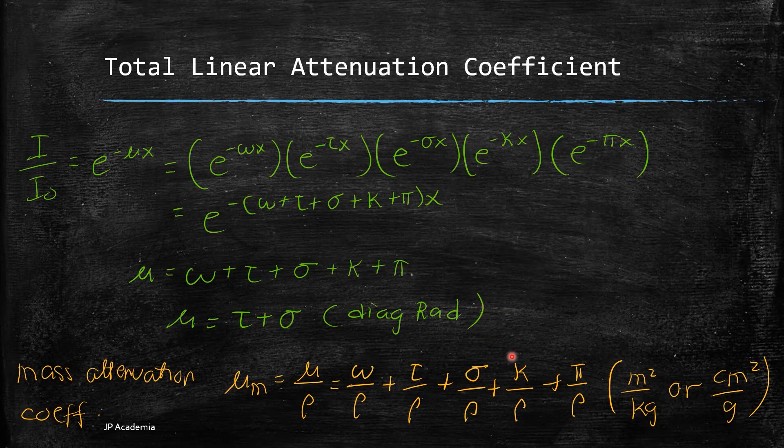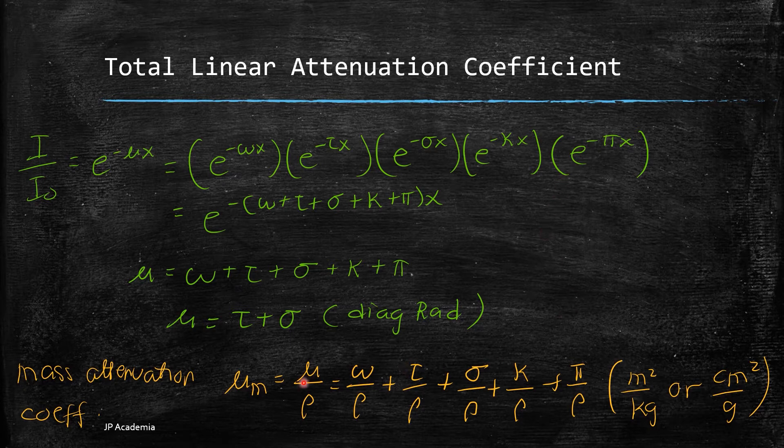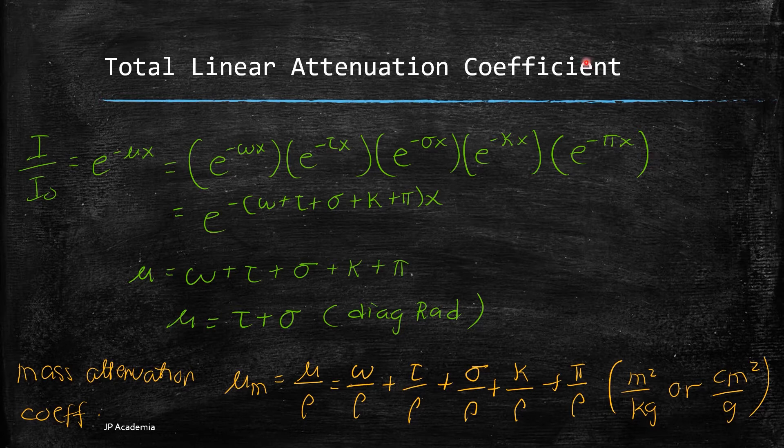We can express these coefficients by dividing the linear attenuation coefficients by the mass density rho as shown here. This is called the mass attenuation coefficients with units of square meters per kilogram or square centimeter per gram.